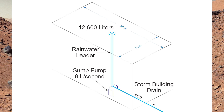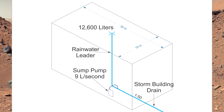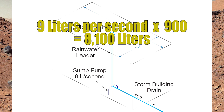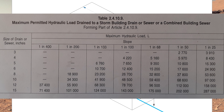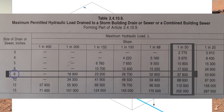The rainwater leader turns the corner and becomes the storm building drain. However, we also have a sump pump. In this example we're keeping things simple — that sump pump is rated at 9 liters per second. So we take 9 liters per second times 900, which equals 8,100 liters that the sump pump is going to dump into the storm building drain. So 12,600 liters plus 8,100 liters equals 20,700 liters. Looking at table 24109, going down the 1 in 50 column to 37,800 liters — we need to be 8 inches.